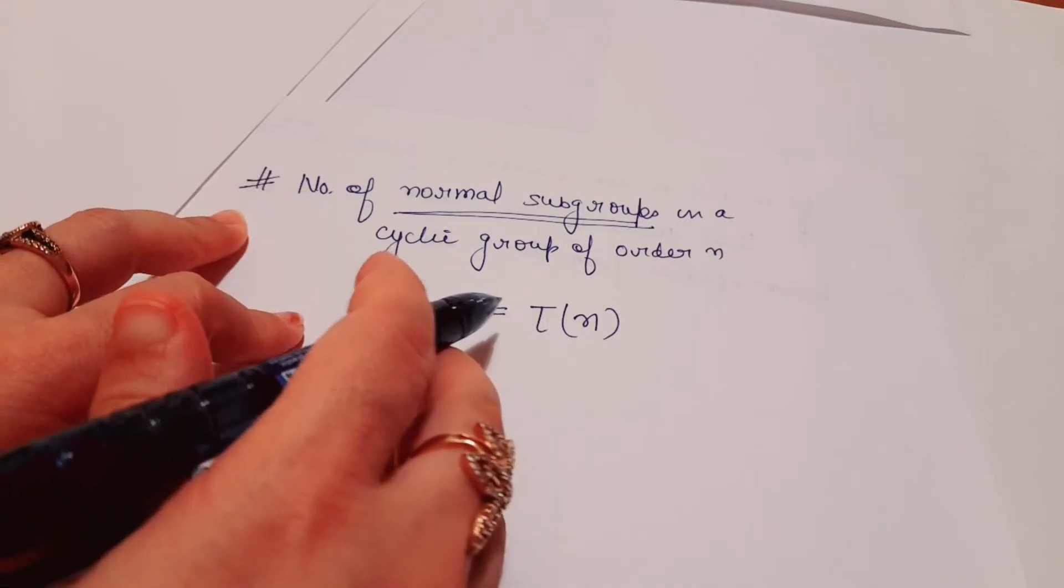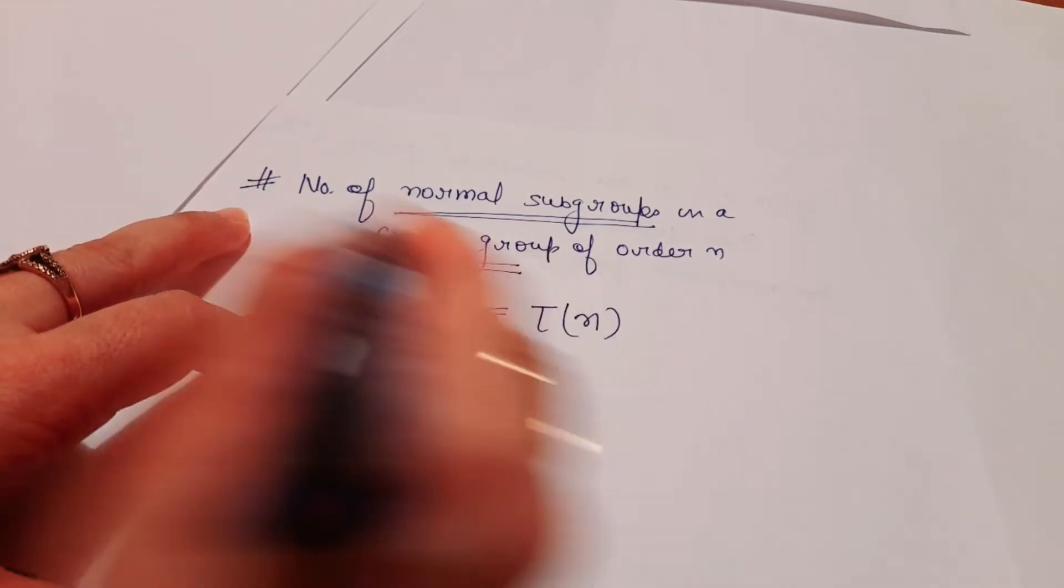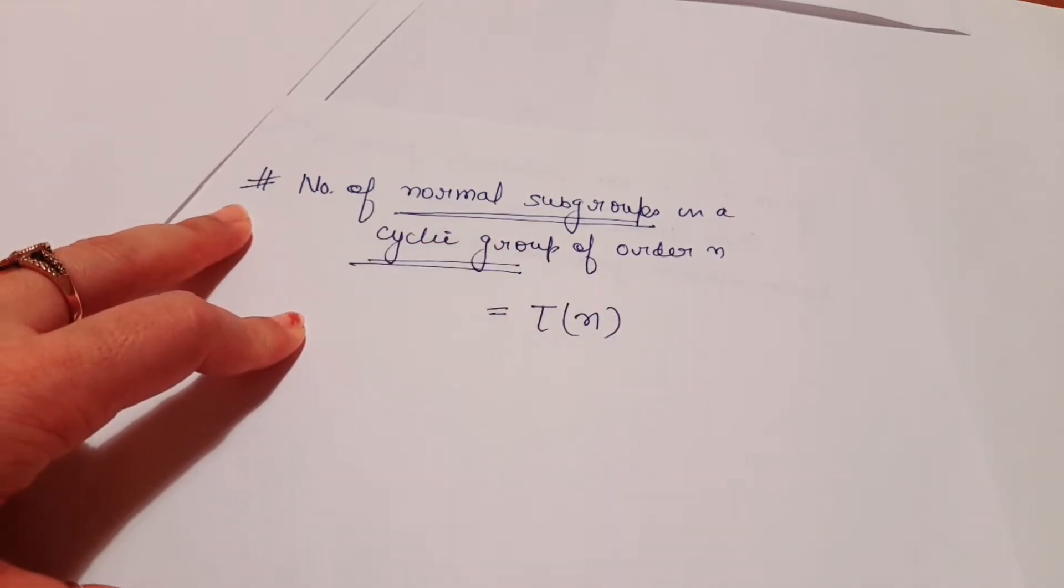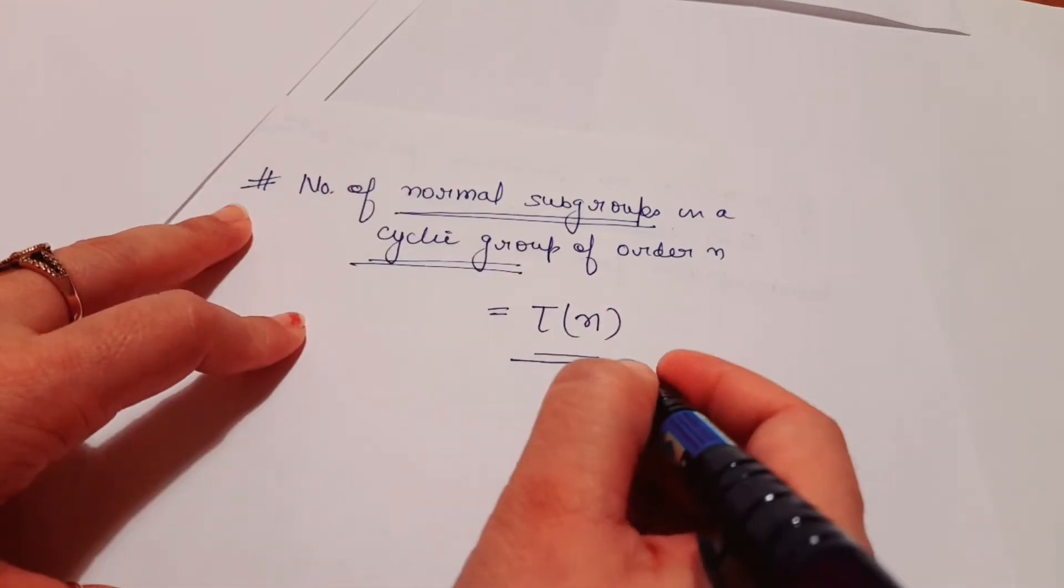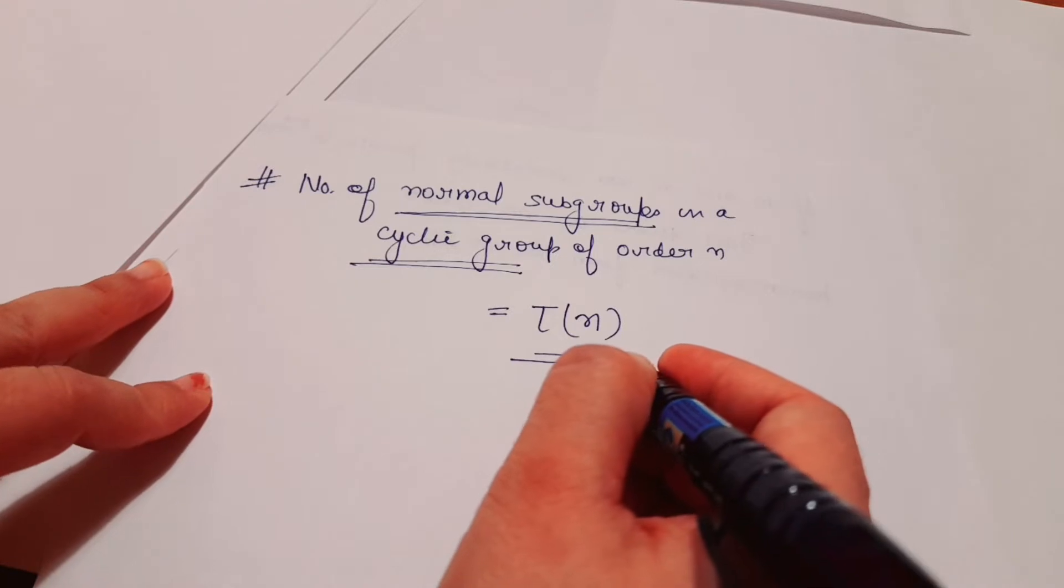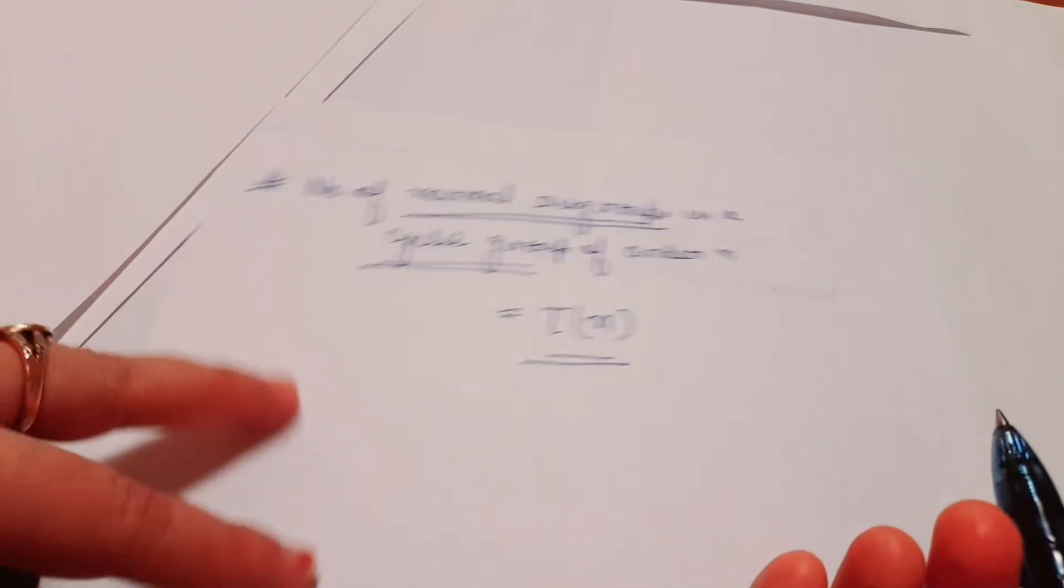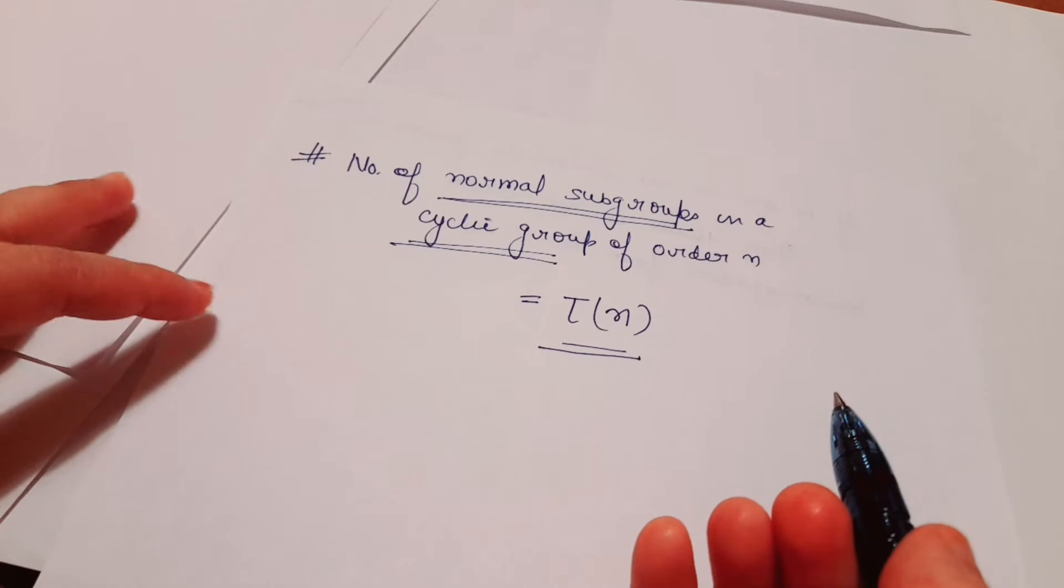So the number of normal subgroups, if we have a cyclic group, is equal to tau n. As we know, any cyclic group has all normal subgroups only.